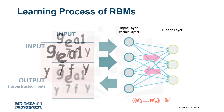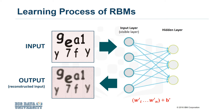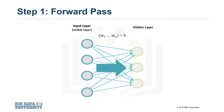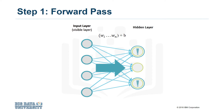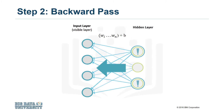After training is complete, the net is able to reconstruct the input based on what it learned. During this process, three major steps are repeated. The first step is the forward pass. In the forward pass, every input is combined with an individual weight and an overall bias. The result goes to the hidden layer, whose neurons may or may not activate. Then we get to step two, the backward pass. In the backward pass, the activated neurons in the hidden layer send the results back to the visible layer, where the input will be reconstructed.